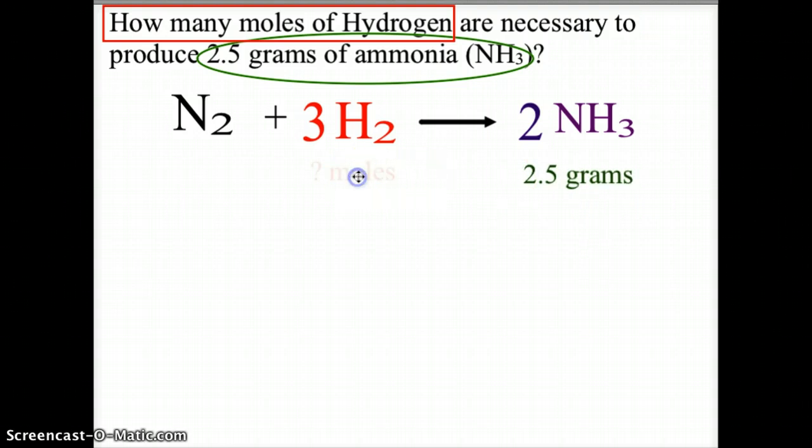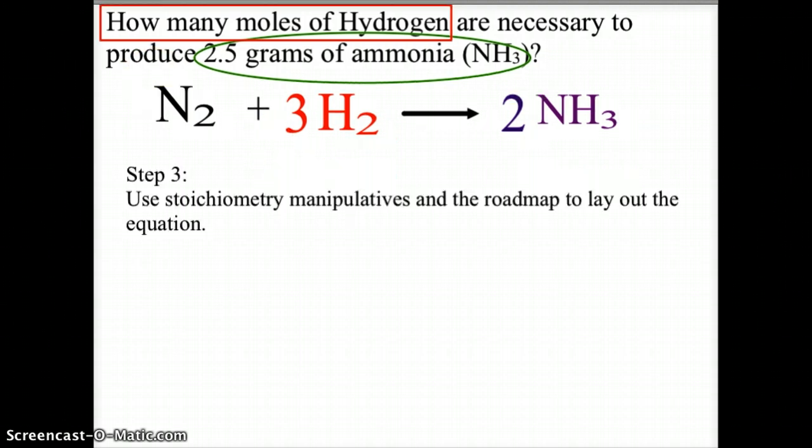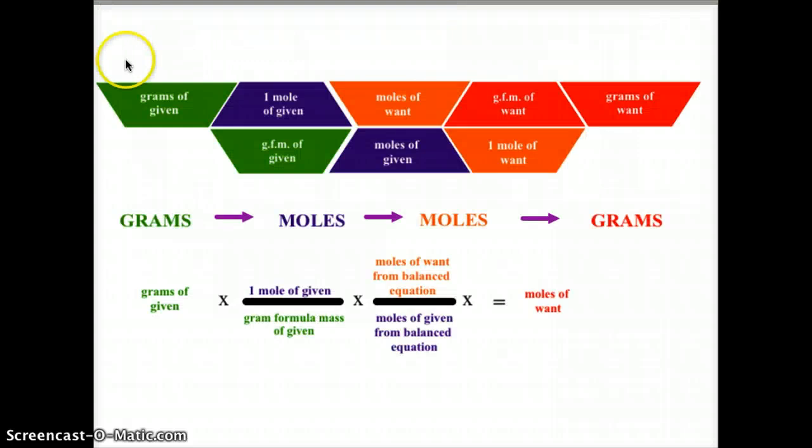And our question is how many moles of hydrogen are we going to end up producing? So the next step is to use stoichiometry manipulatives or a roadmap to lay out our equation, and we do this using our roadmap that we've used before.